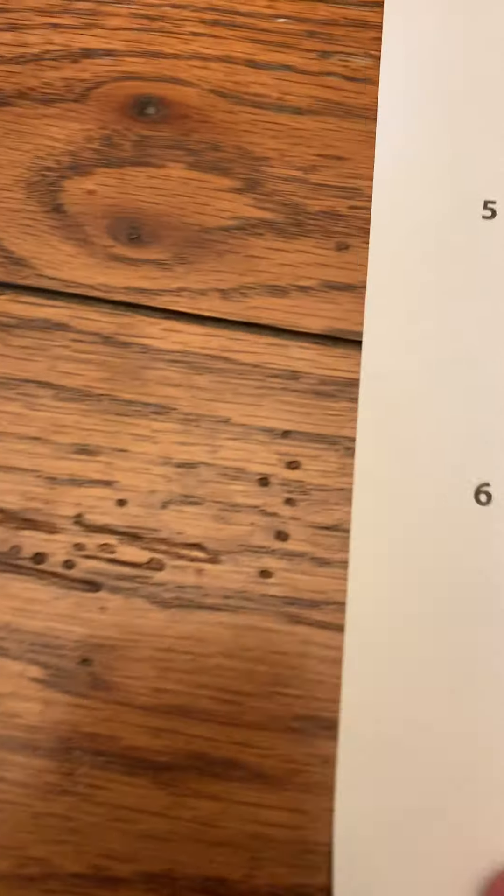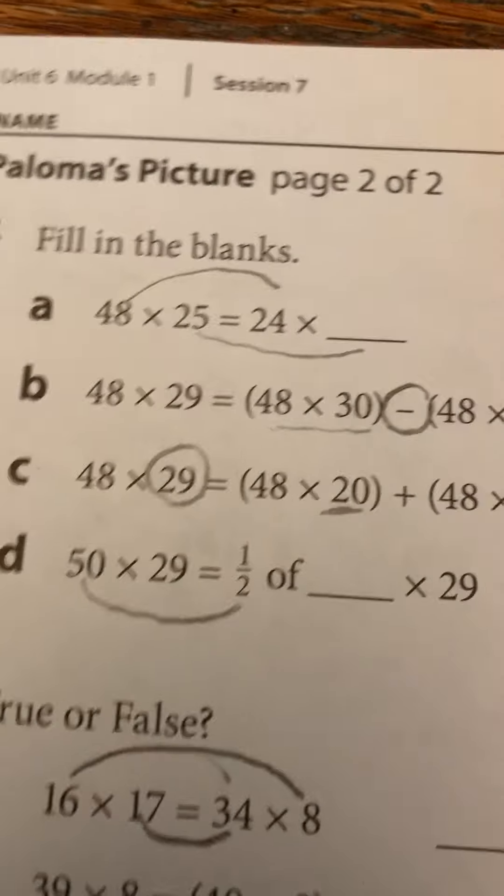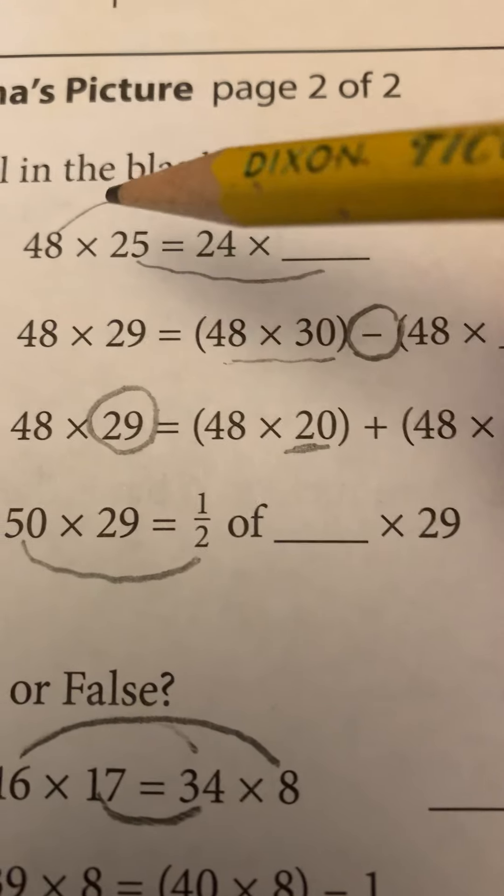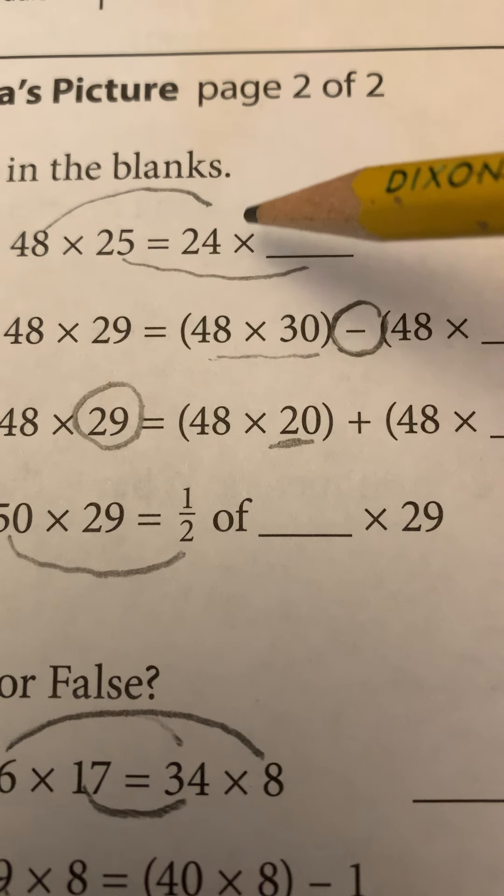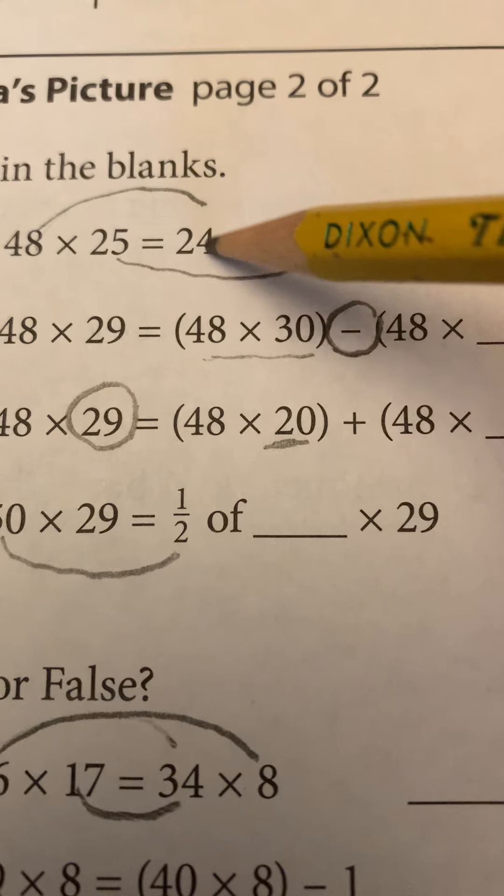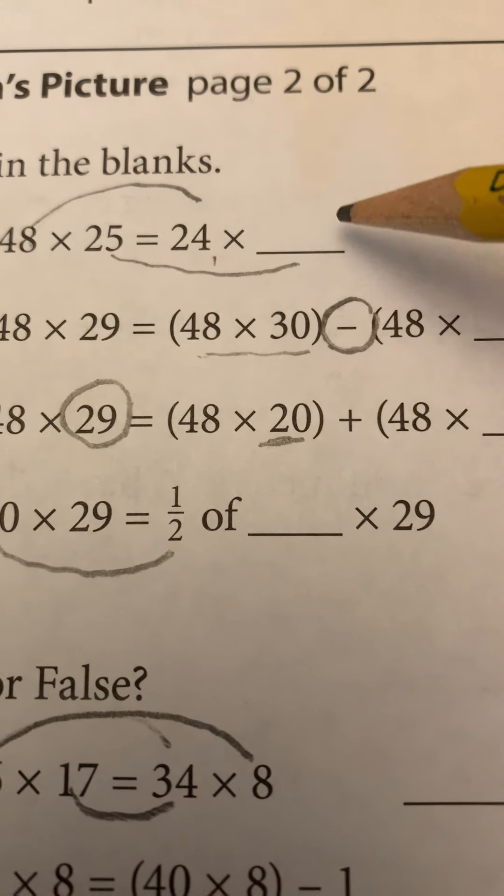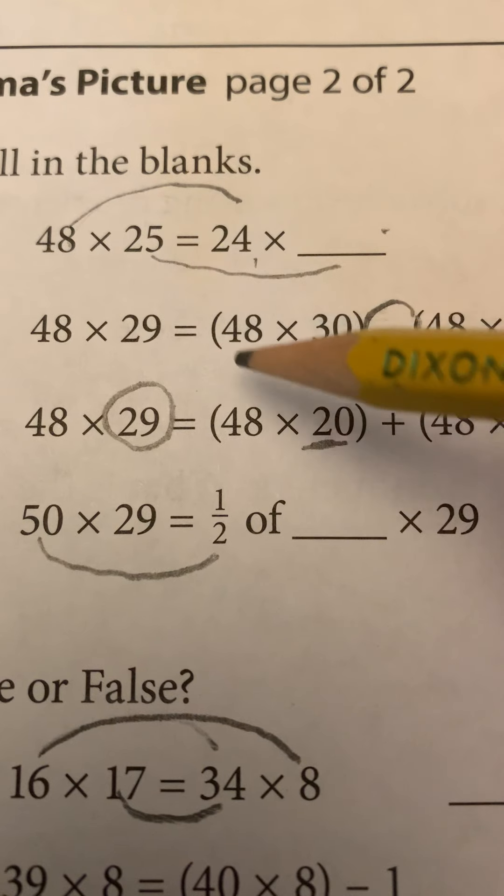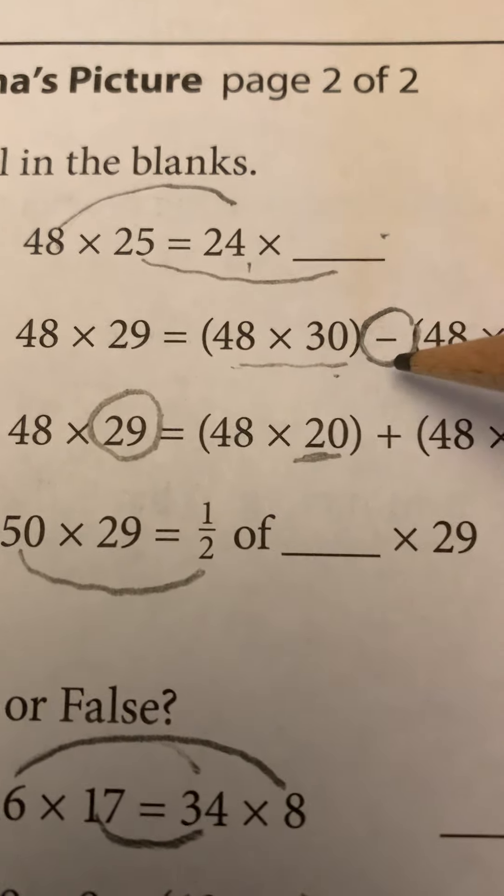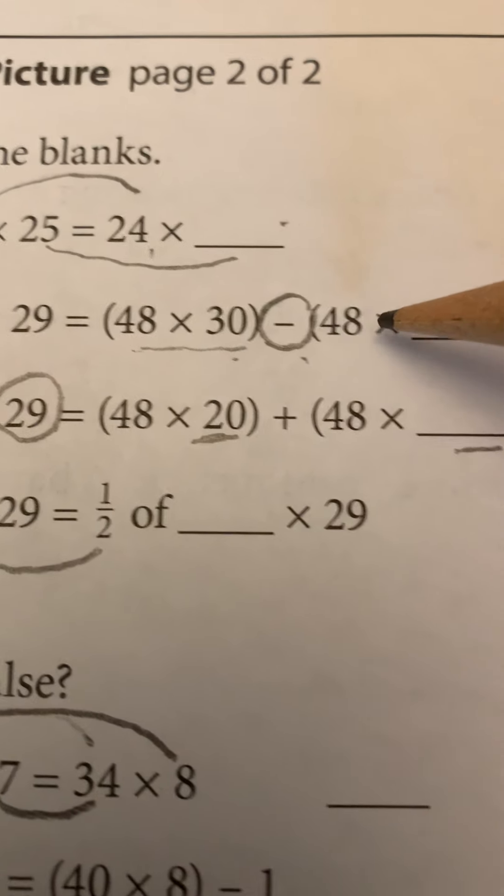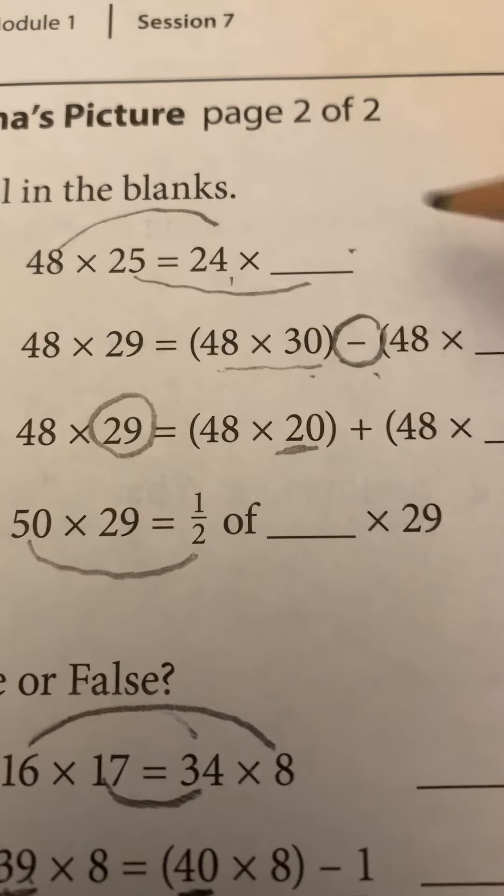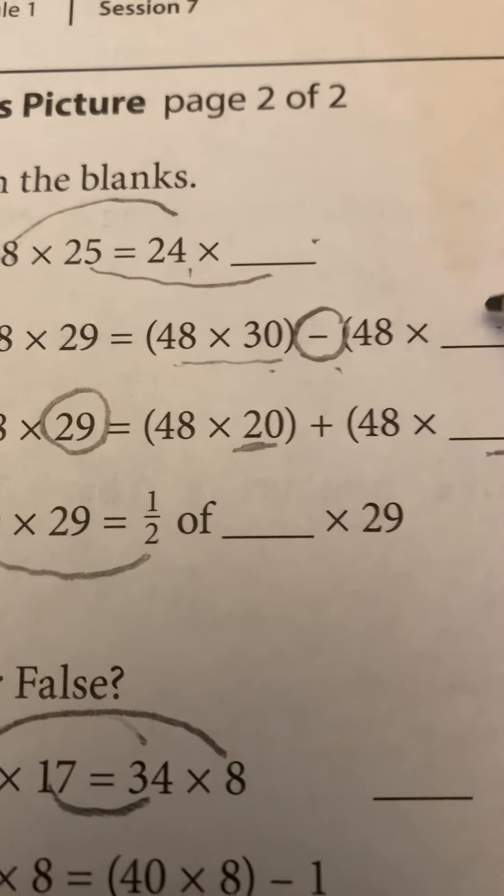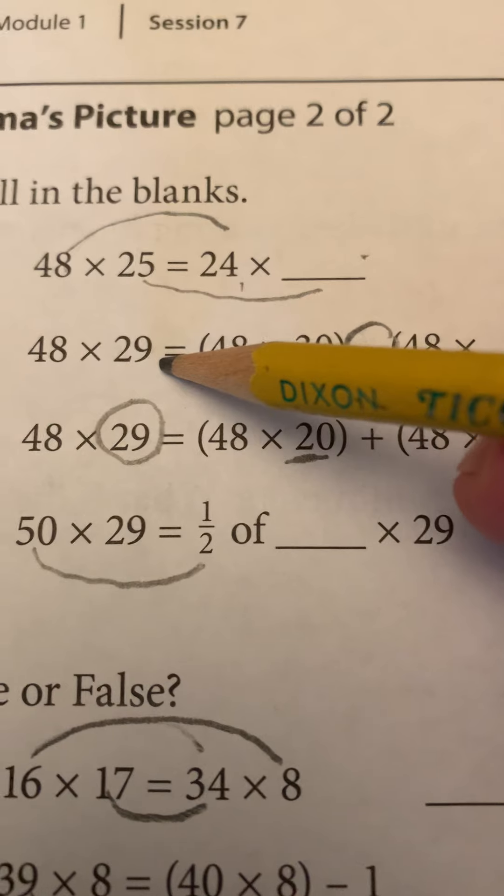On the back side, there's some fill in the blanks and true and false. I'm going to talk them out with you. 48 times 25 equals 24 times what? So if I half one, I'm going to double the other. 49 times 29 equals 49 times 30 minus 40 times what? So 30 sets minus what set will give me 29?